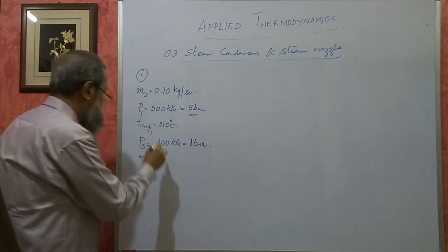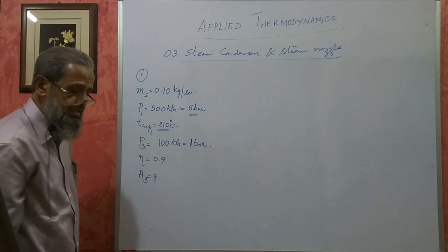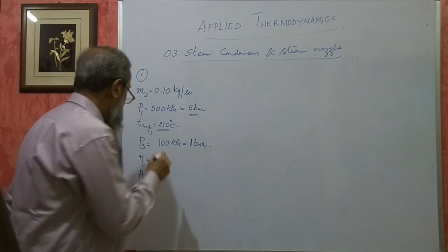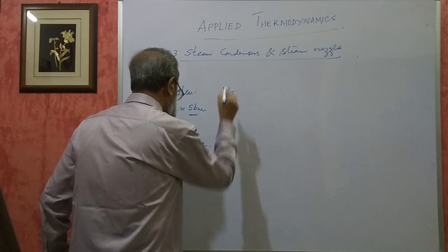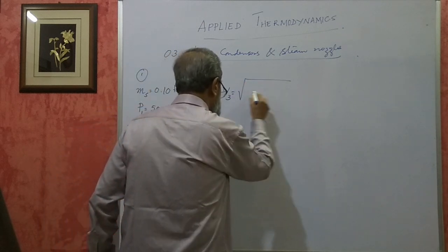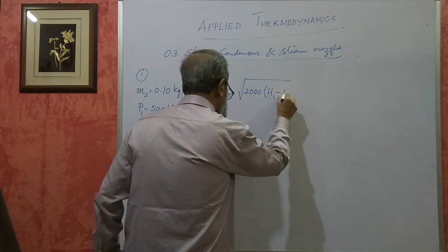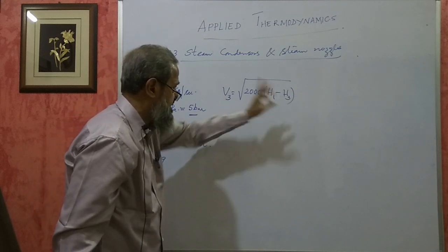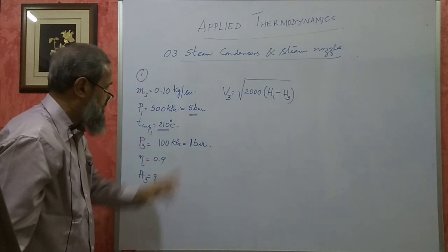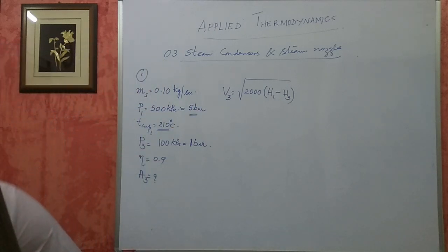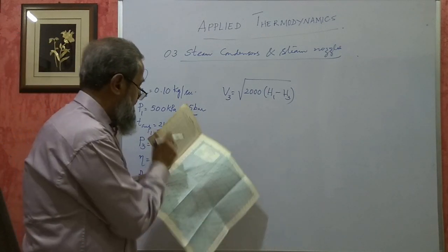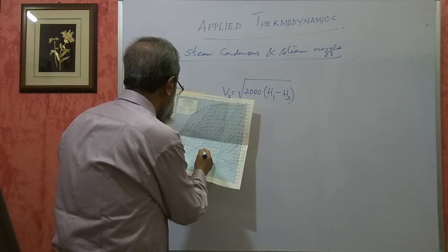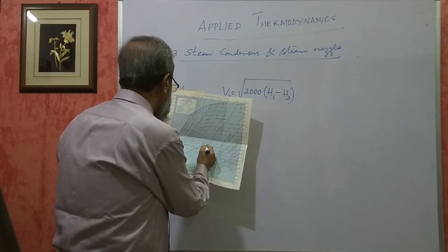At the entrance, the steam is superheated at 210 degree centigrade. We have to find out V3 first. V3 equals the square root of 2000 into (H1 minus H3), where H1 is the enthalpy at entrance and H3 is the enthalpy at exit. These enthalpies are found using the Mollier chart. On the chart, locate 5 bar pressure and 210 degree centigrade — it is somewhere between 200 and 250 degree lines.